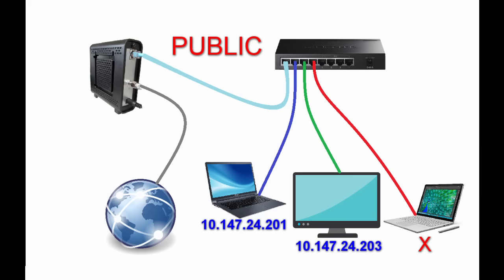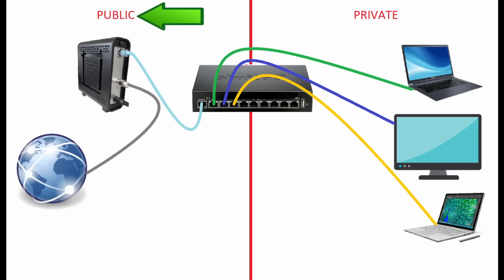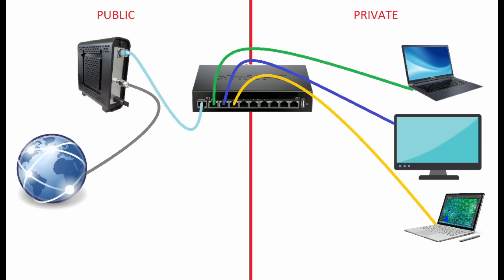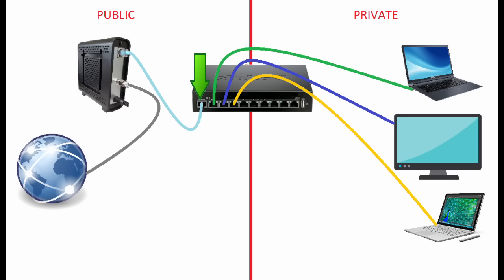The best way to share your internet connection between multiple devices is to add a router between your modem and your devices. A router is a device that routes traffic between two different networks. The two different networks we would be connecting would be the public network of your ISP and your new private network on the other side of the router. Instead of everything being on the public network — aka the internet — you can have all of your devices behind the router on a private network, which is better for security. A router will also take care of handing out IP addresses to all of the devices you connect to it, and it will have plenty to give out. You connect your modem to the WAN or internet port on the router, and then connect your devices to any of the LAN ports. These ports are, in essence, a switch built into the router.